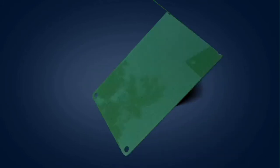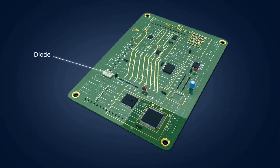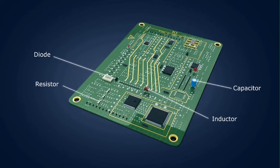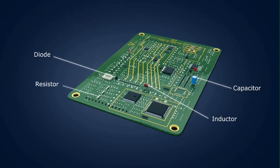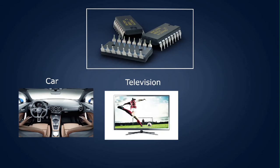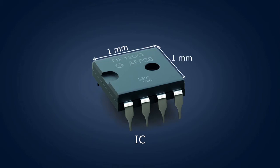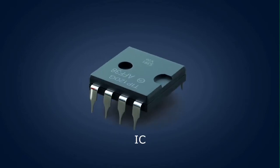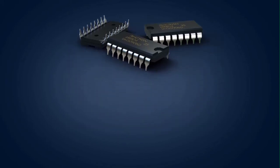An attempt was made to fabricate an entire circuit consisting of many components such as diodes, resistors, inductors, and capacitors on a small single block of a semiconductor, connected with the help of metal strips. This gave rise to the concept of integrated circuits. ICs are found in almost all gadgets like cars, televisions, CD players, and cell phones. The size of an IC is about one millimeter by one millimeter, and this small size has made the miniaturization of electronic gadgets possible.